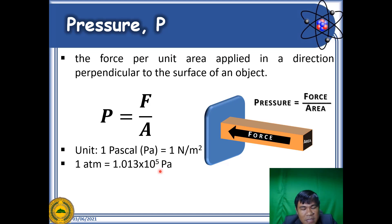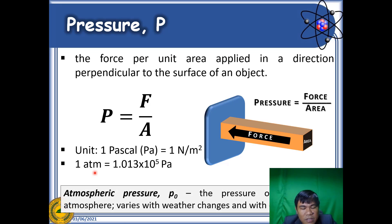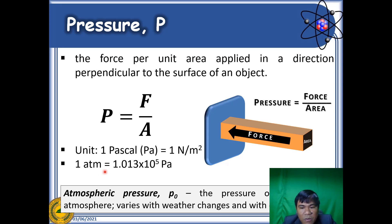Pascal is also related to atmospheric pressure. Atmospheric pressure is the pressure exerted by air molecules on us — human beings and any living or non-living creatures on the surface of the Earth. One atmospheric pressure is equal to 1.013 times 10 to the 5 Pascal.